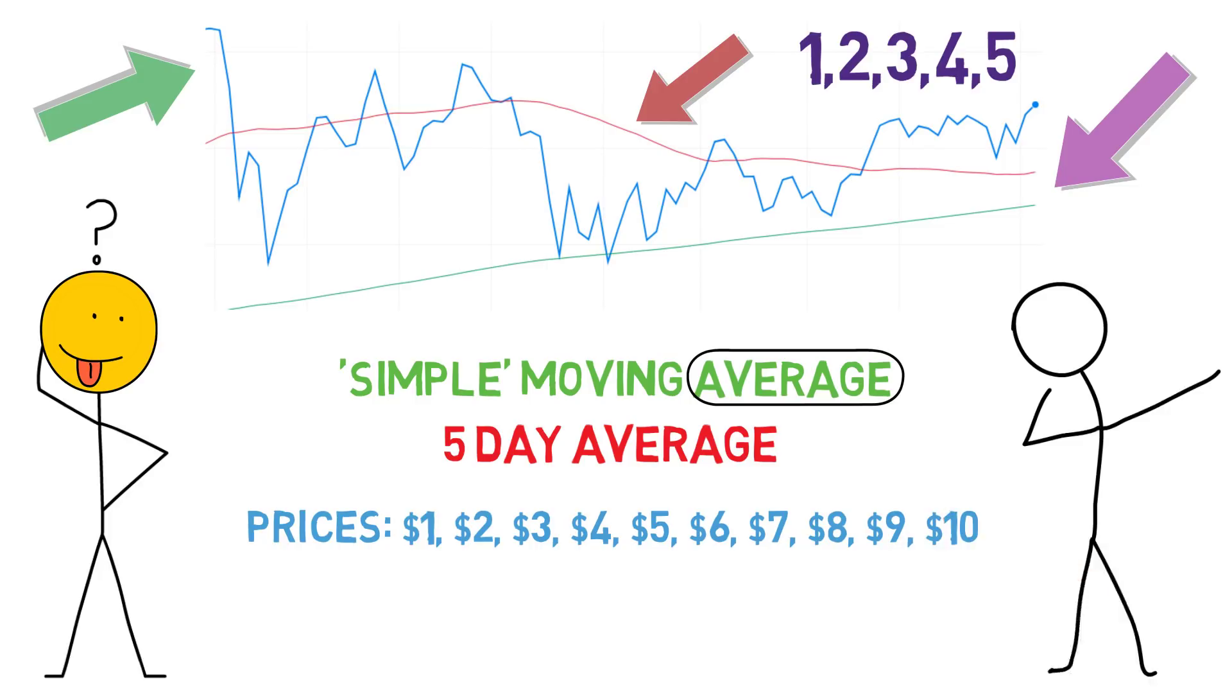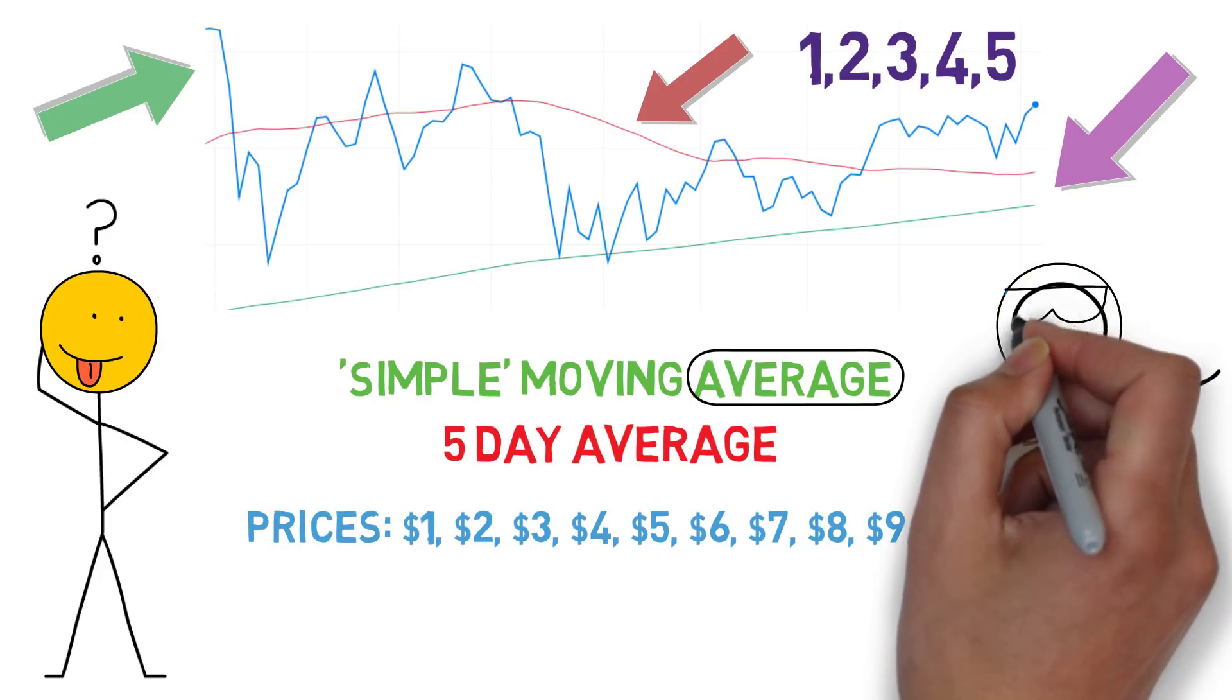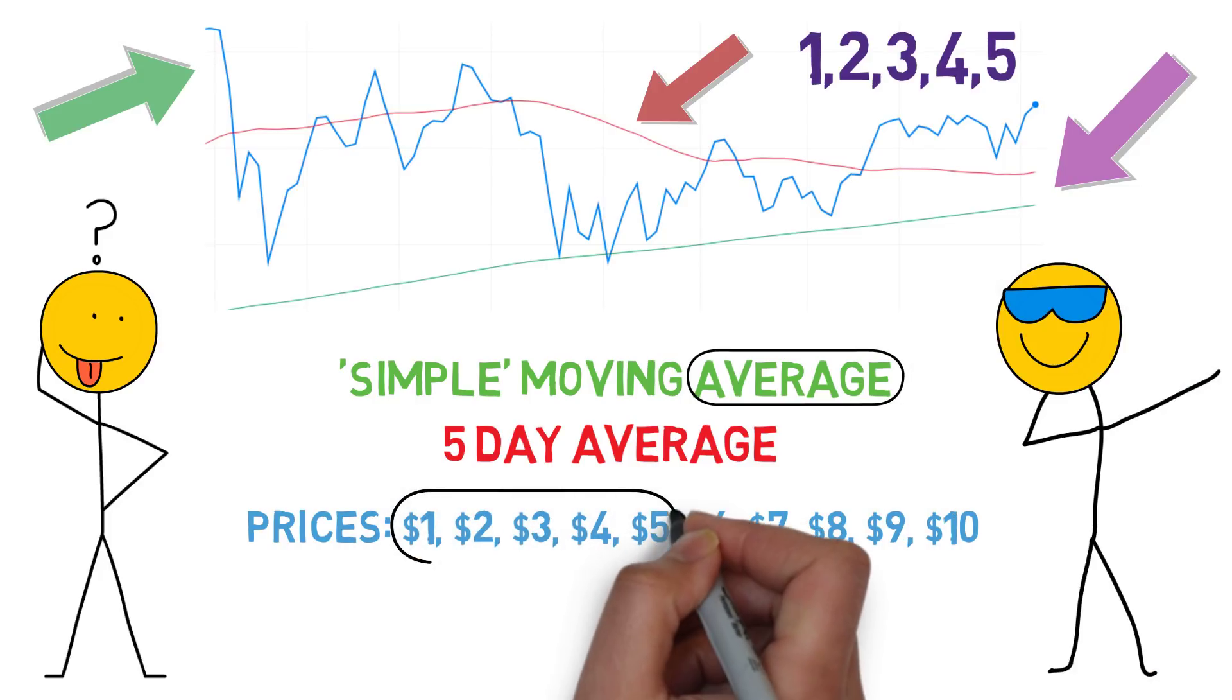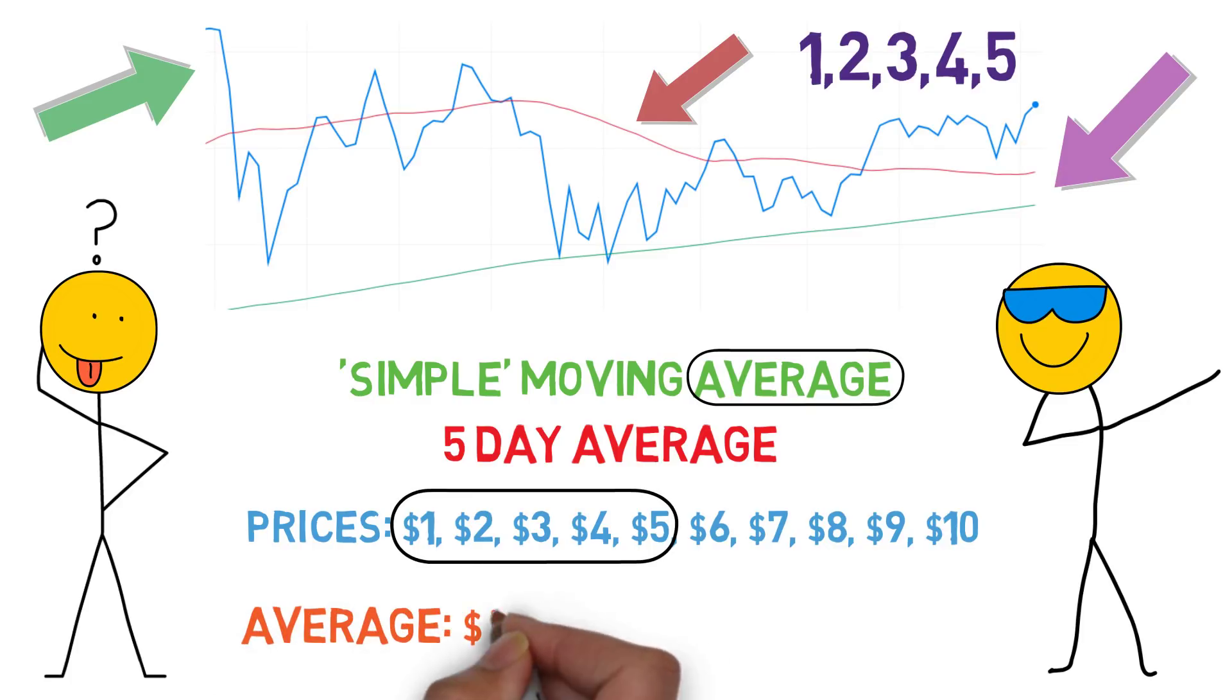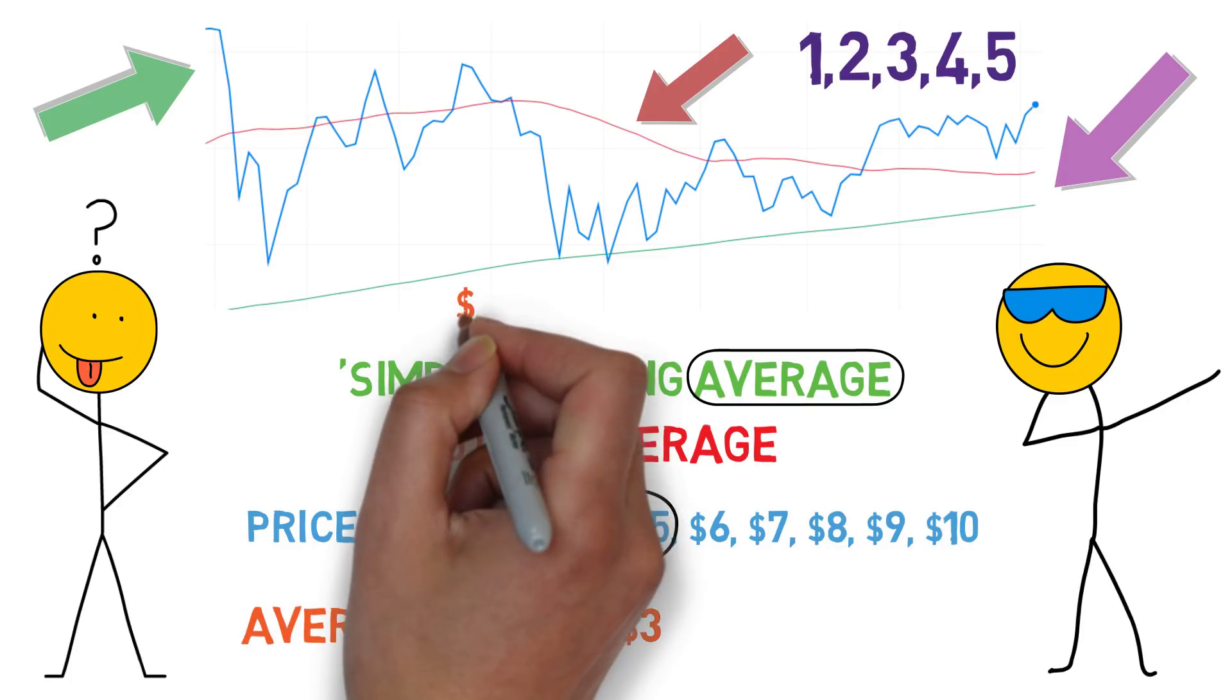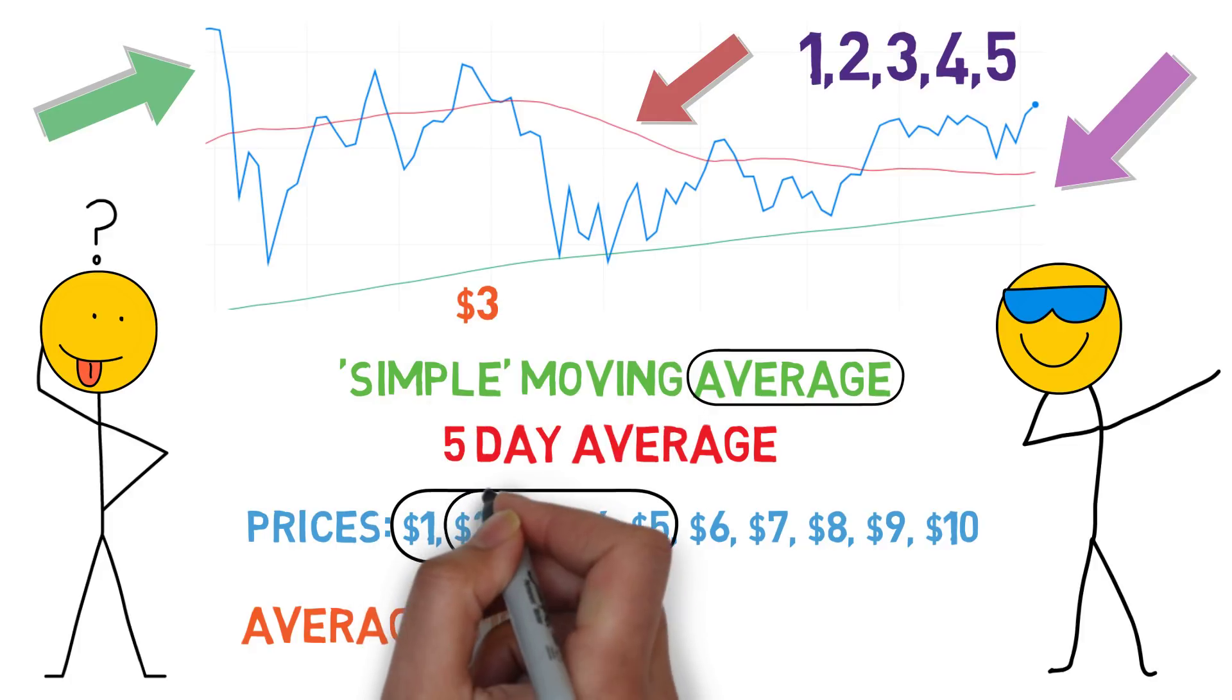Let's use a simple example of a stock with 10-day prices like this, from 1 to 10. The first average we can get is 1 plus 2, plus 3, plus 4, plus 5, divided by 5, which is 3. Three will be the first point of our simple moving average line.